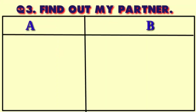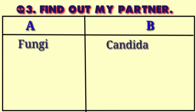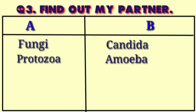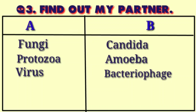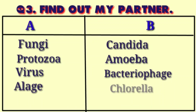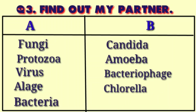Question 3: Find out my partner. Column A and B — Fungi: Candida; Protozoa: Amoeba; Virus: Bacteriophage; Algae: Chlorella; Bacteria: Prokaryotic.